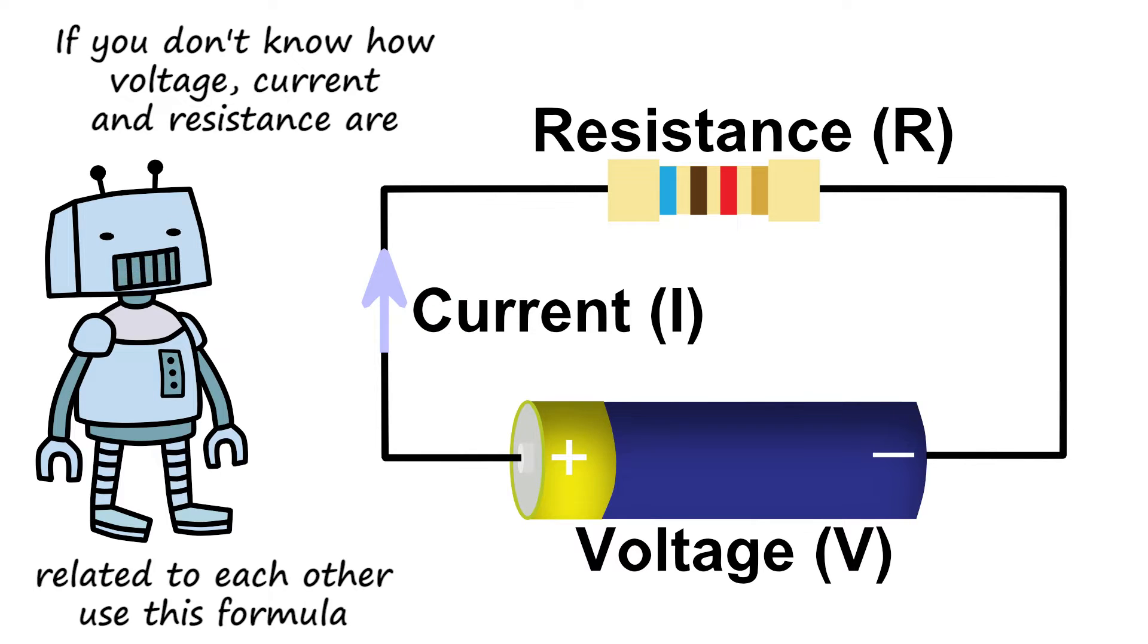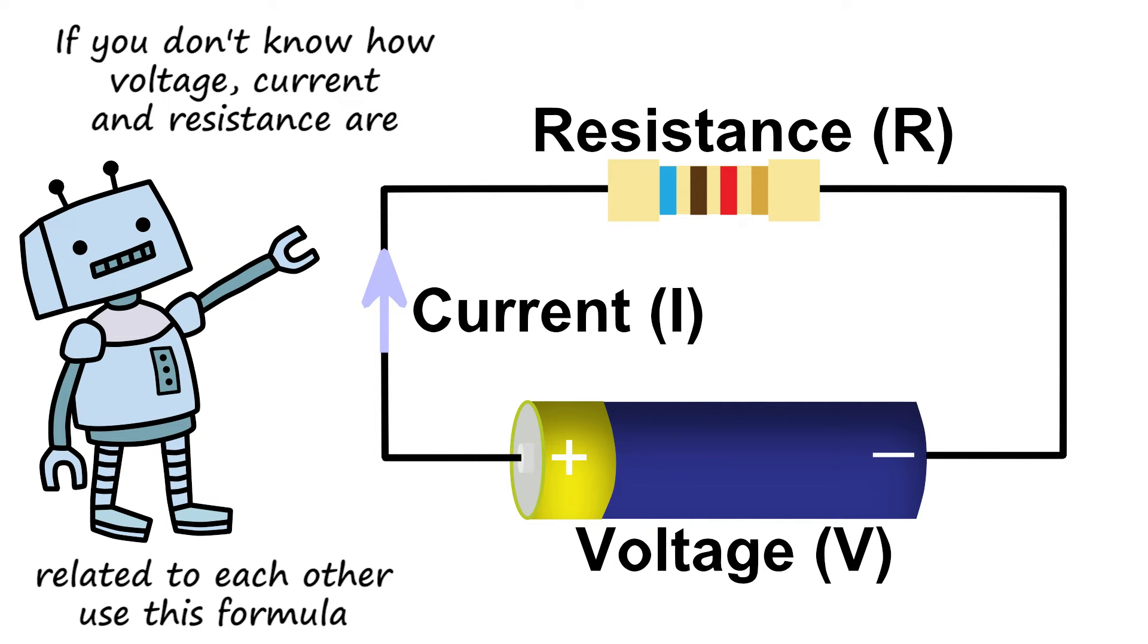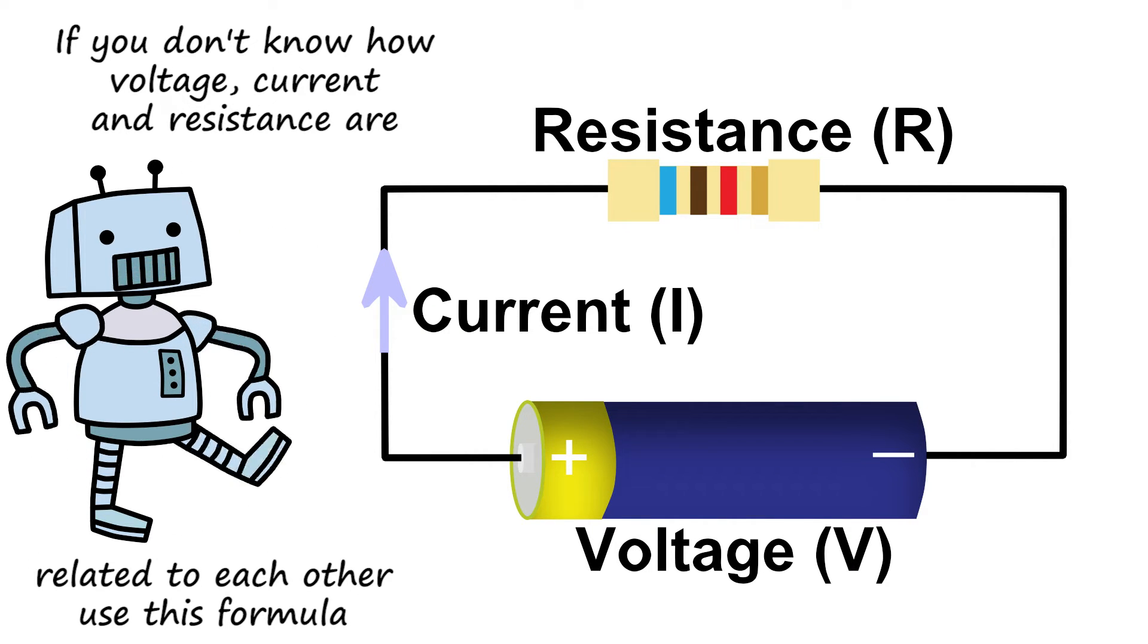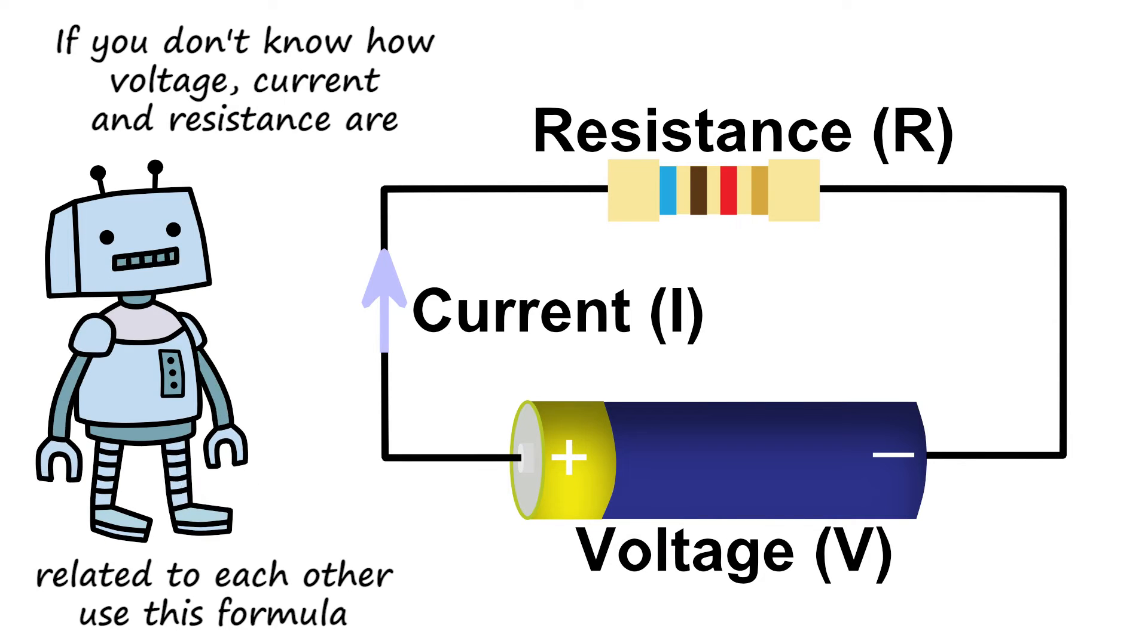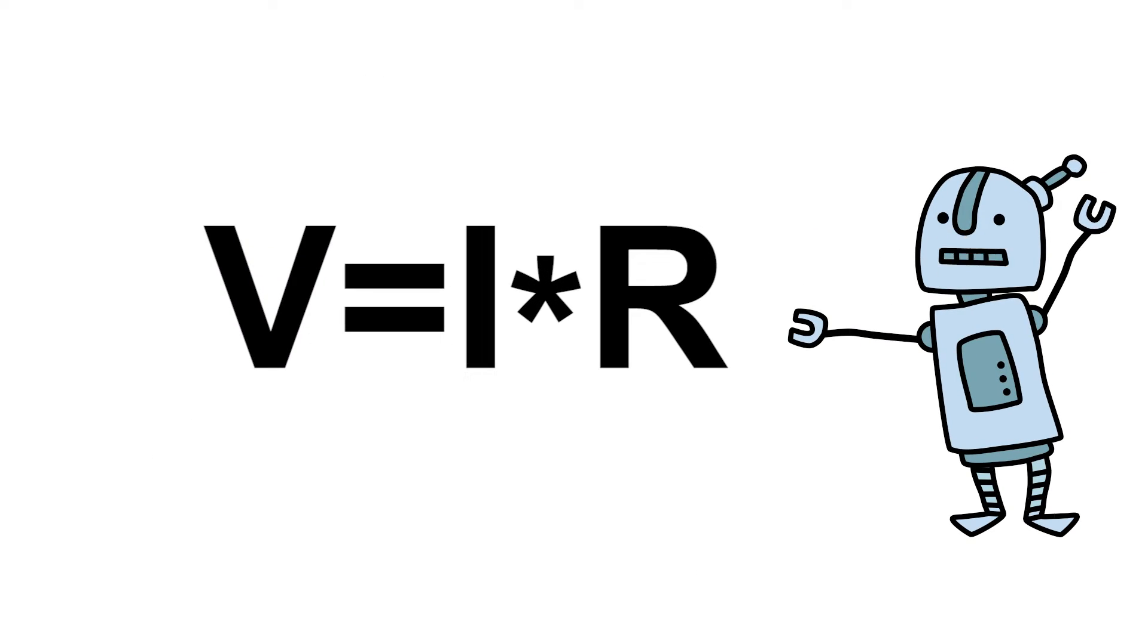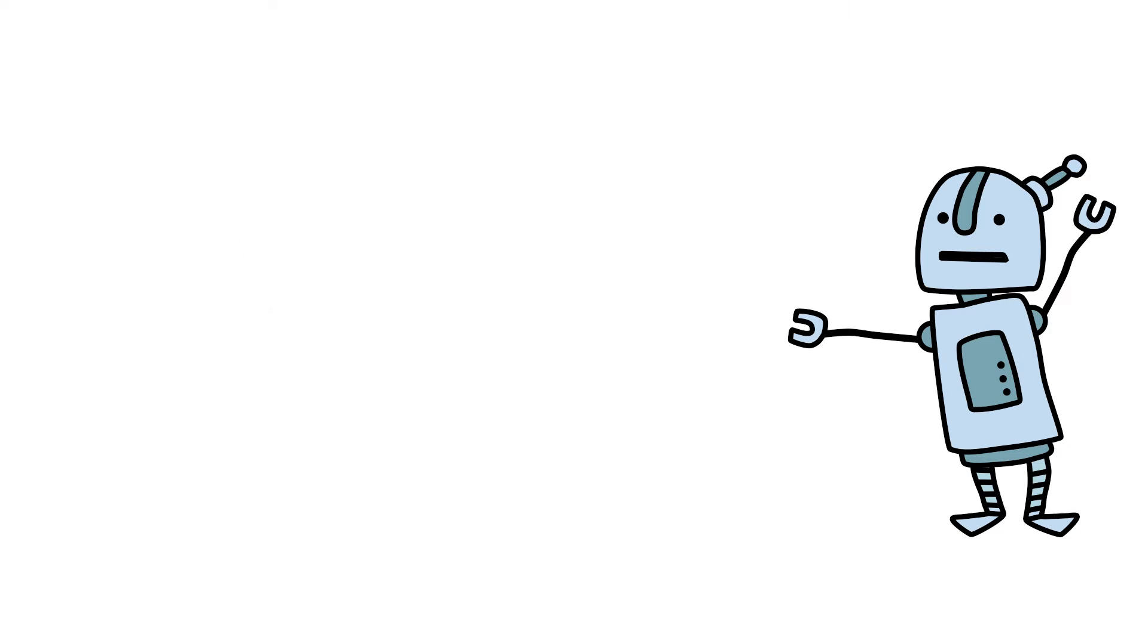If you don't know how voltage, current and resistance are related to each other, use this formula. V equals I times R, V equals I times R.